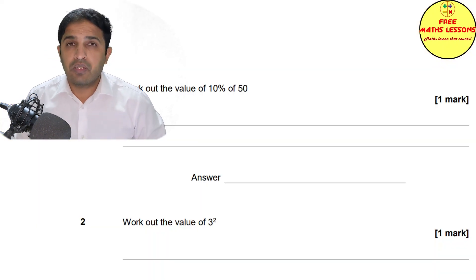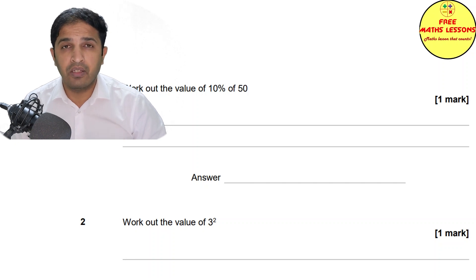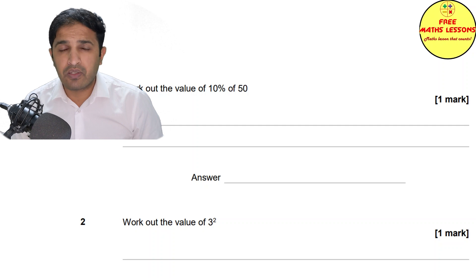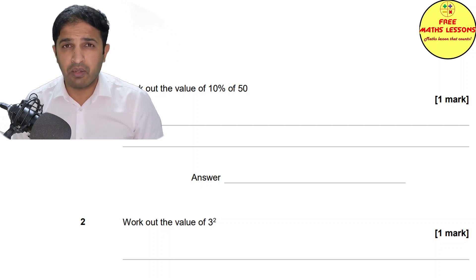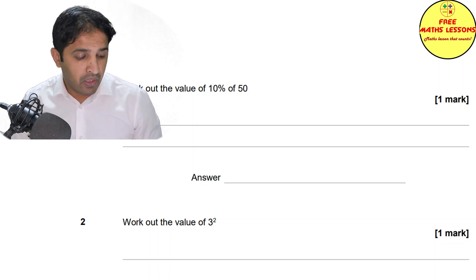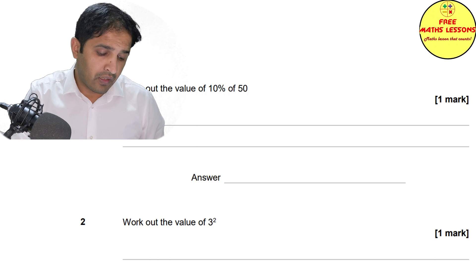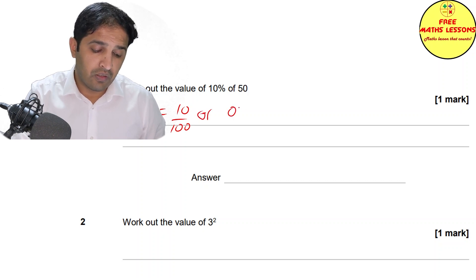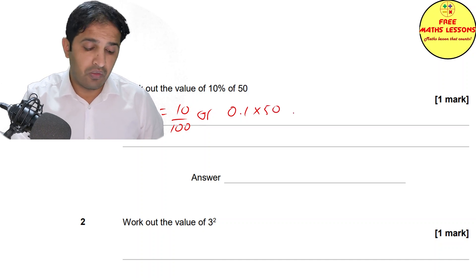The first question is 10 percent of 50. This is a calculator paper so make sure you're using a calculator — the one you normally use so you know all the buttons. If you don't have a percentage button, write 10 percent as a fraction: 10 out of 100, or as 0.1.